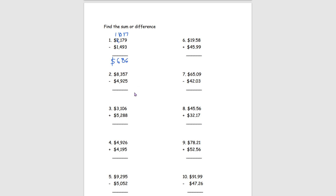For number 2 we do the same thing. 7 minus 5 gets us 2, 5 minus 2 gets us 3, 3 minus 9 is impossible so we have to borrow 1 from the 8. The 8 becomes a 7 and the 3 becomes a 13. 13 minus 9 gets us 4, and 7 minus 4 gets us 3. So our answer for number 2 is $3,432.